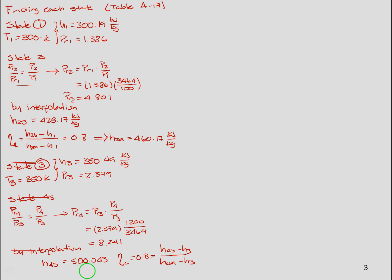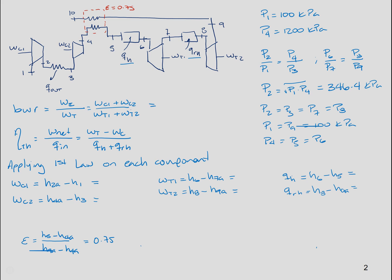So by interpolation, we can find that h4s, since we use the isentropic expression, is 500.043 kilojoules per kilogram. Using the same definition of the isentropic efficiency of the compressor, we can get that h4a is equal to 537.481 kilojoules per kilogram. We're going to skip state 5 until we get state 9.